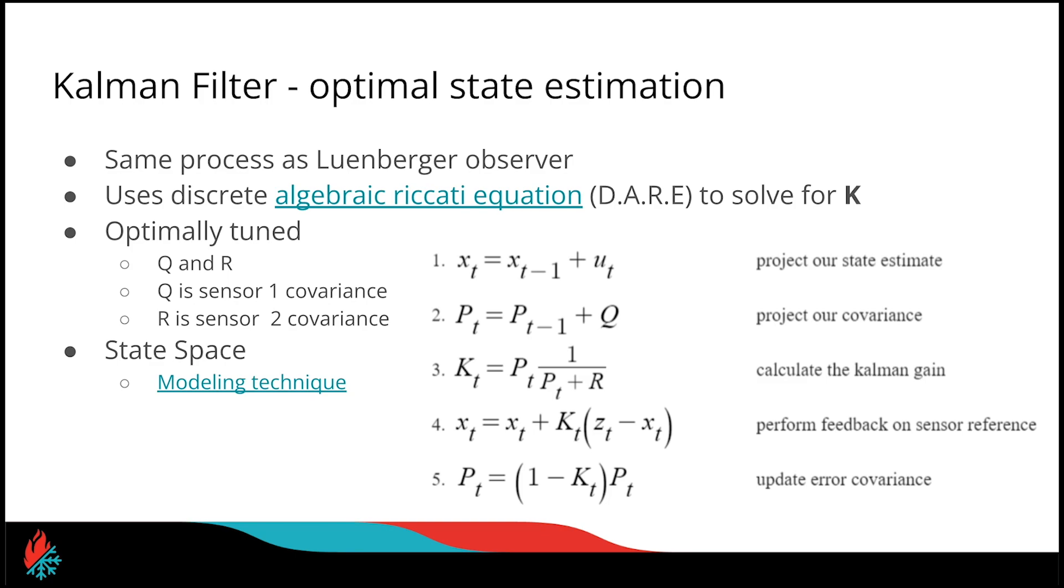The Kalman filter is an optimal state estimation algorithm. It uses the same update process as the Luenberger observer and is even often called an optimal Luenberger observer. This uses an equation known as the discrete time algebraic Riccati equation, also known as the DARE, to solve for that gain K. As the controls engineer, it is our job to choose two values of Q and R. These values of Q and R tell us how much we trust our, in this case, sensor one and sensor two. Based on that, we will iteratively approach an optimal value of K.